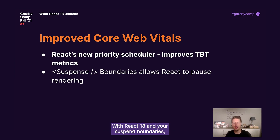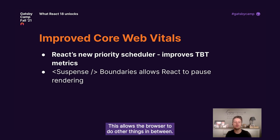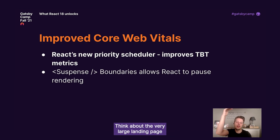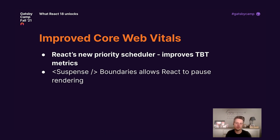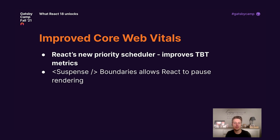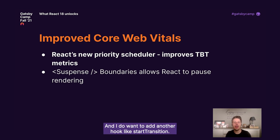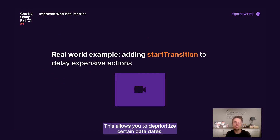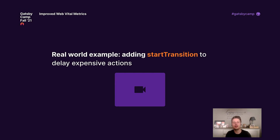With React 18 and your Suspense boundaries, React can stop hydrating at certain levels. This allows the browser to do other things in between. Think about a very large landing page with your header, a lot of content, and then your footer. Why would you want to wait for the footer to be hydrated? Now with React 18, it's all possible. And there's another hook like startTransition, which allows you to deprioritize certain state updates.